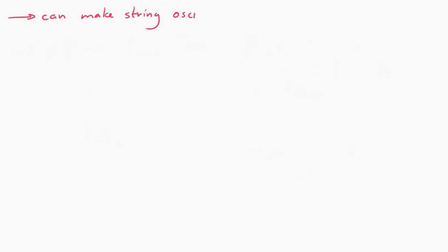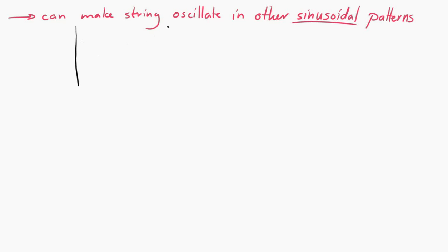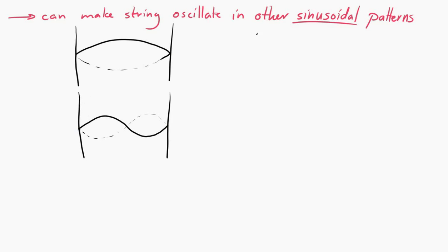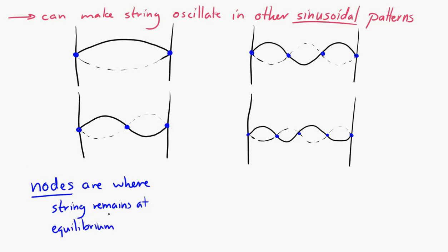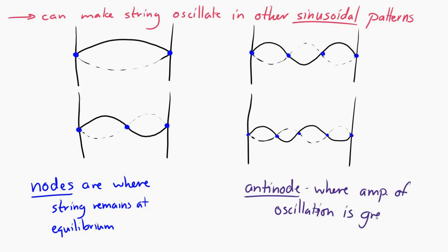It's also possible to make the string vibrate in different ways, as long as it's sinusoidal — so as long as it looks like a sine or a cosine. In each case, the string stays fixed on each end. But we can also have other fixed points within, between the walls. The locations where the string stays at equilibrium are called nodes. Different vibration patterns will have different numbers of nodes. The locations where the oscillation is greatest are called antinodes. Each of these situations is called a standing wave, and in each situation there are fixed points at the ends.